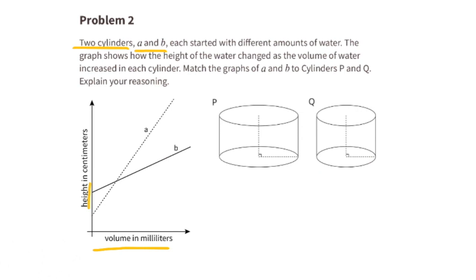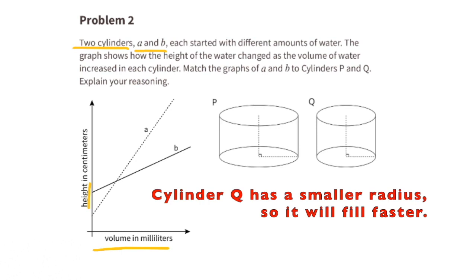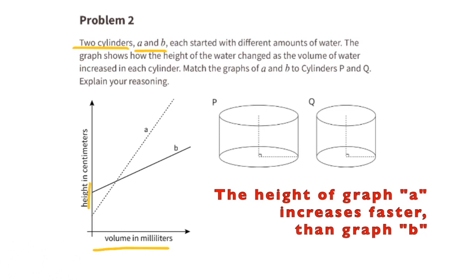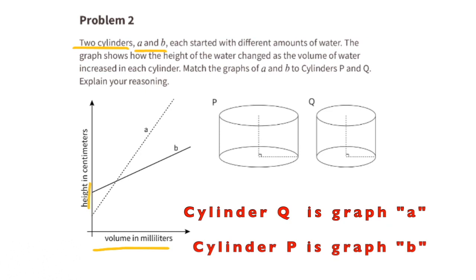Problem number 2. Two cylinders, A and B, each started with different amounts of water. The graph shows how the height of the water changed as the volume of water increased in each cylinder. Match the graphs of A and B for cylinders P and Q. You can tell they started with different amounts of water by looking at the y-axis and where the lines start — that's the y-intercept. Graph A shows the height increasing at a faster rate than graph B. Cylinder Q has a smaller radius, so it will fill faster. Therefore, Cylinder Q matches with graph A, and Cylinder P matches with graph B.